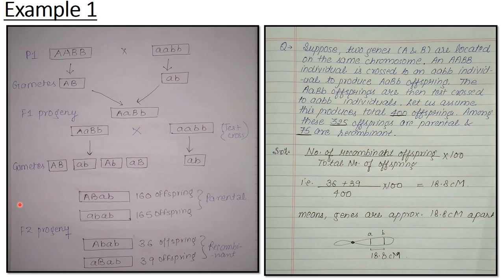Here is the first example. A cross is given, the number of offsprings are given. Total offsprings are given, from which some are parental and some are recombinant. In our last video we had discussed about the recombinant things. The new combinations that are formed are recombinant. Parentals are the original ones that carry the genotype of parents.